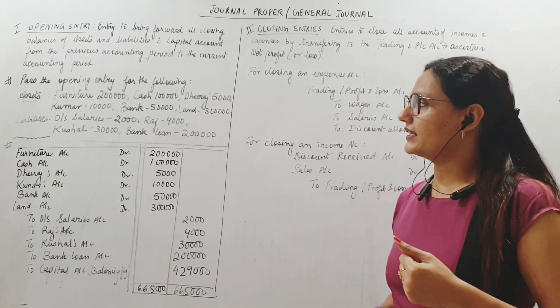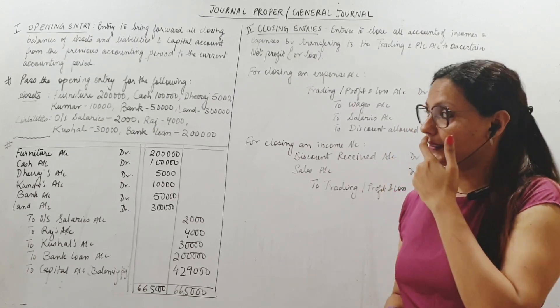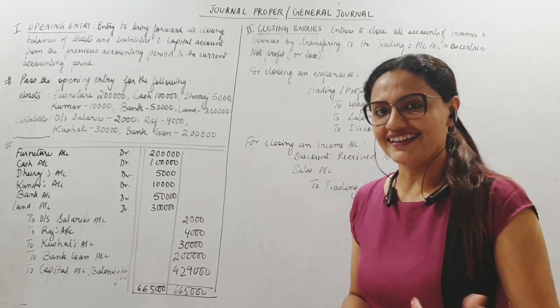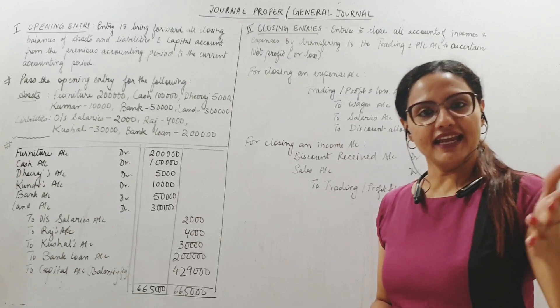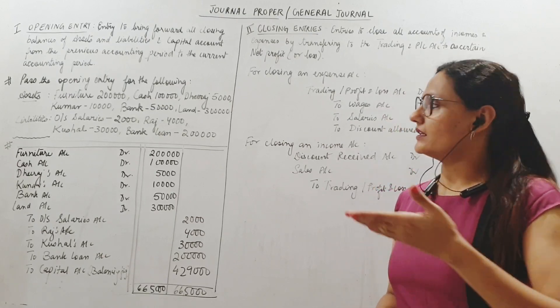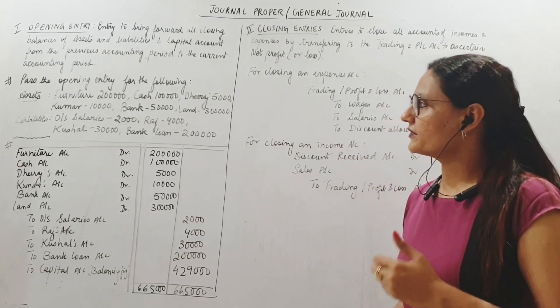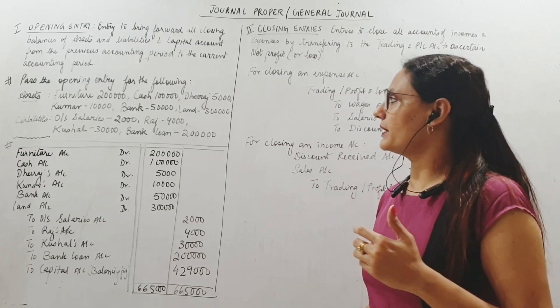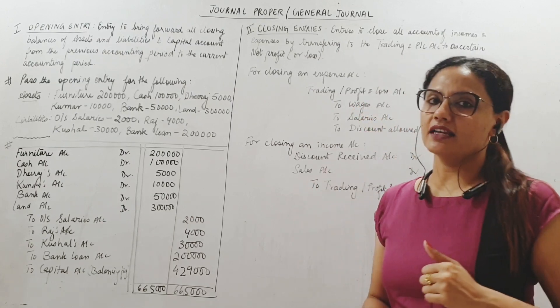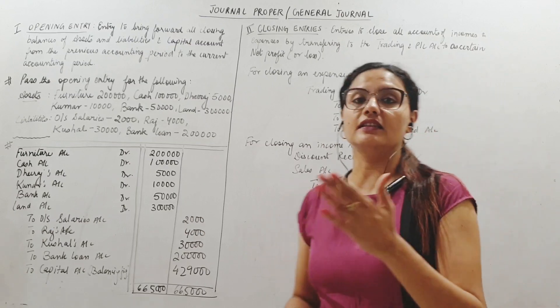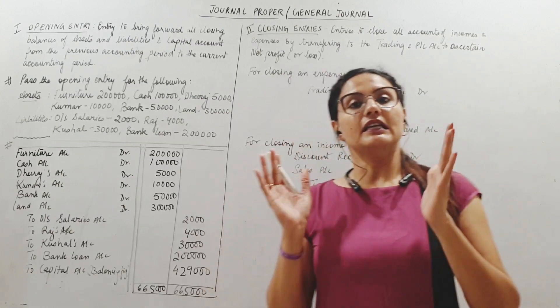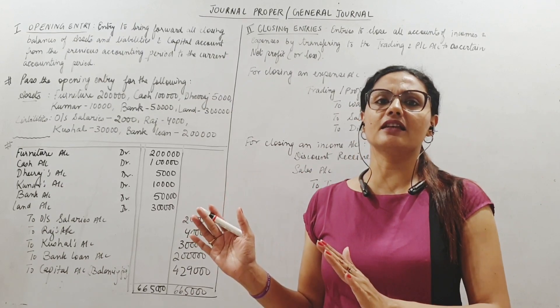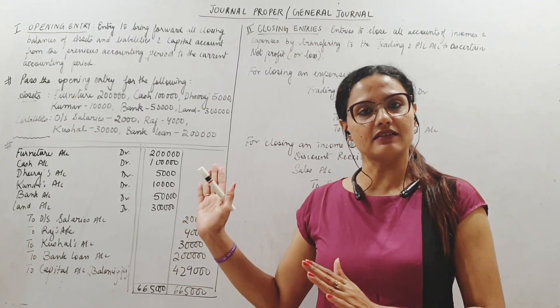Assets: Furniture - fixed asset, Cash - current asset, Dheeraj - a debtor, an asset to me, so Dheeraj must be five thousand. Kumar - again a debtor. Bank account - my asset, my cash in bank. Land - again my fixed asset. So all these are the list of assets that I have from the last year. These were there in the last year also. At the end of the year, these were the balances.